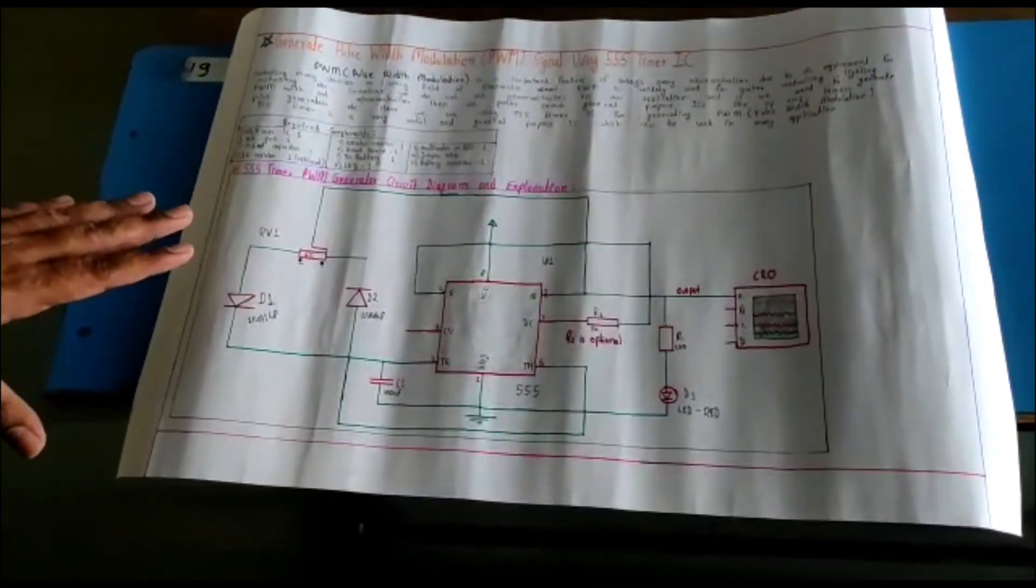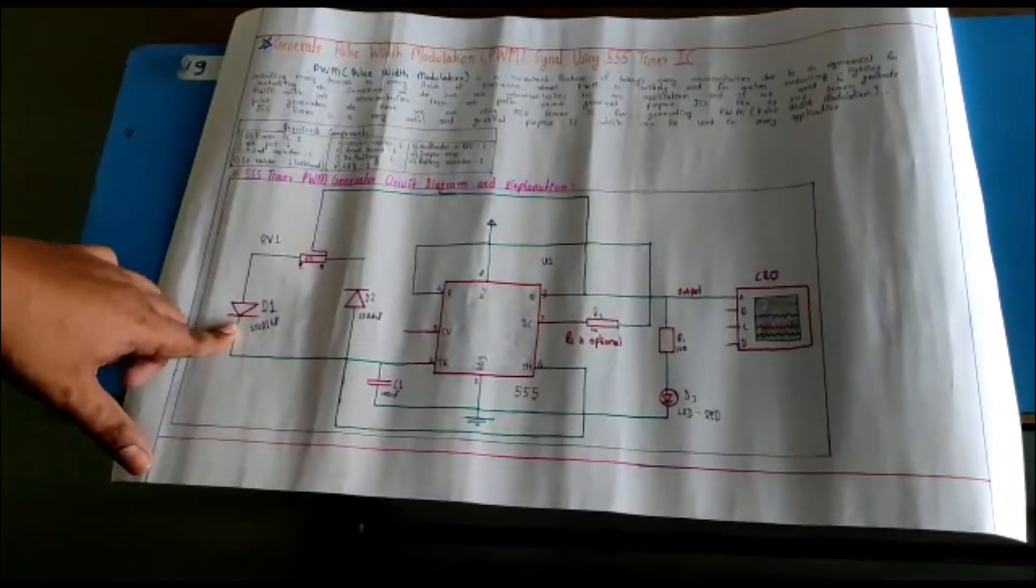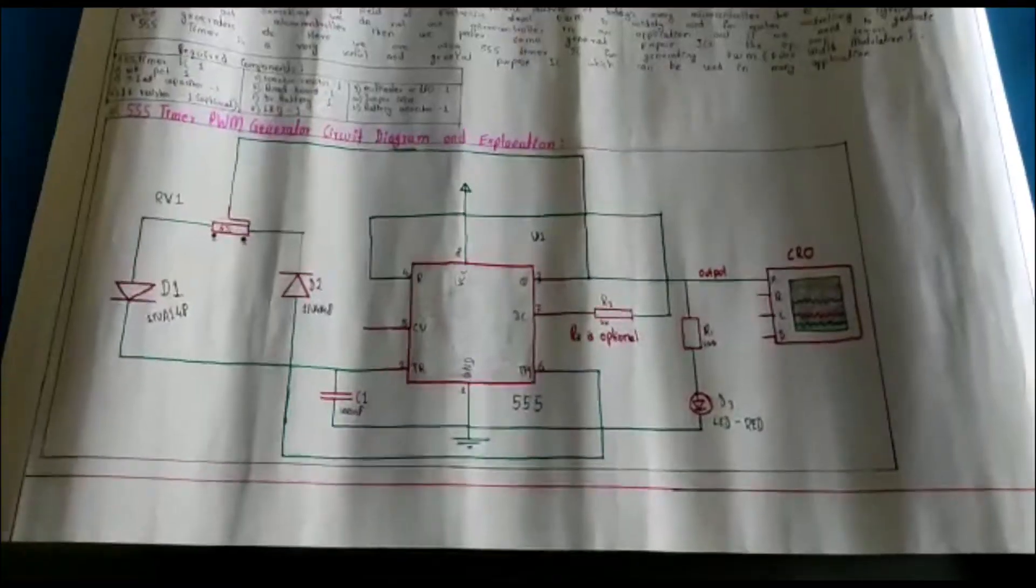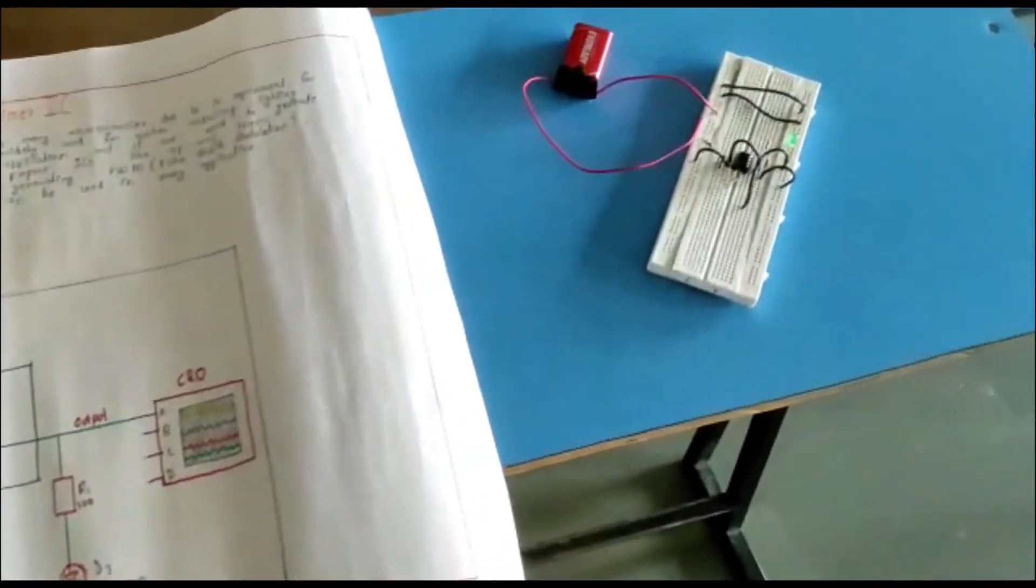The capacitor charges through the D1 diode and discharges through the D2 diode to generate the PWM signal. Here is the working and demonstration of the PWM circuit.